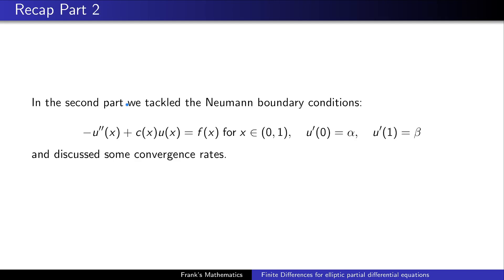In part two, we slightly increased the difficulty by replacing the Dirichlet boundary conditions with the slightly more complex Neumann boundary conditions. The difference is that we do not impose conditions on the function u itself, but rather on its first-order derivative. In the end we also discussed some convergence rates — if you're interested, go check out part two.